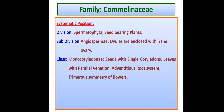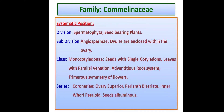The root system is adventitious — unlike dicots where it is a taproot system, in monocots the root system is adventitious. The symmetry of the flower is trimerous, meaning the tepals are present in a 3+3 form, or may be 6. This symmetry is called trimerous symmetry. There is no subclass; the next rank is series.